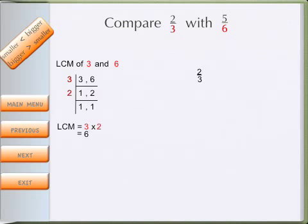2 over 3, we have to change that to the common denominator of 6. So how do we do that? We have to times the denominator with 2 so that it becomes over 6. Thus we have also to do the same for the numerator times 2, which becomes 4. So now 2 over 3 has become 4 over 6.